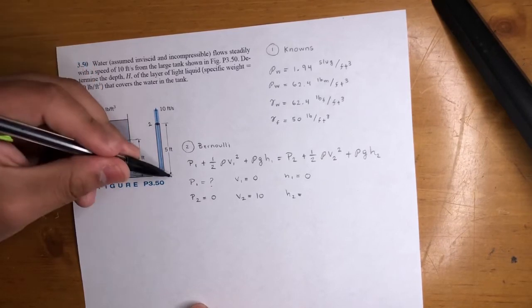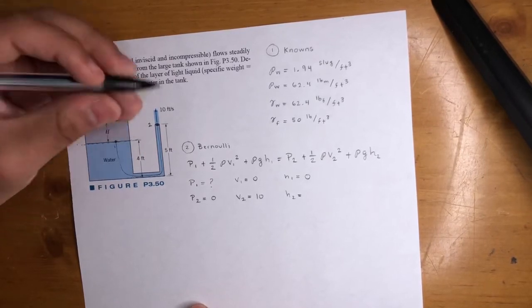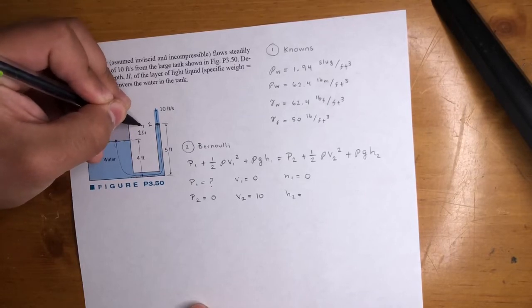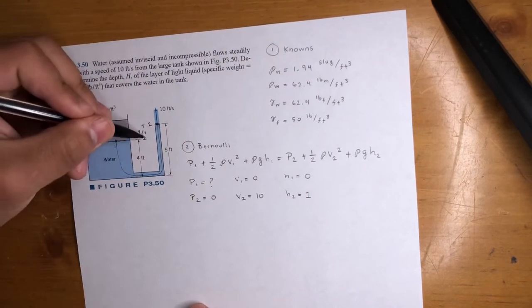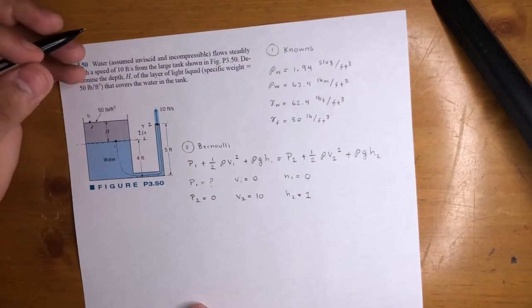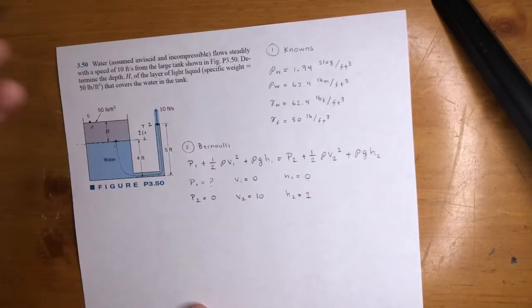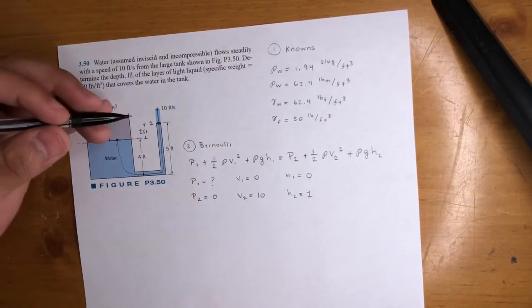H2 is one foot away from the reference line. So this is five feet, this is four feet. That means this right here is one foot. So H2, and it's positive. It's above the reference, okay? Make sure this could be a negative or positive. You got to be careful.